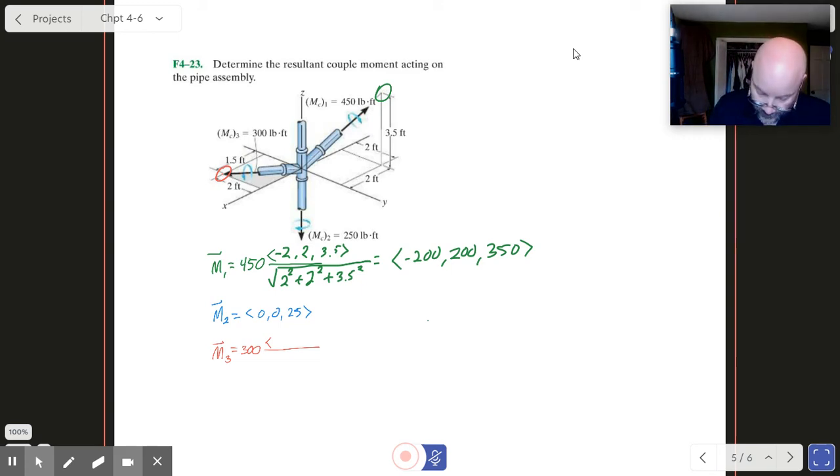And so in terms of X, we're coming up a foot and a half. In terms of Y, we've gone backwards two. And we've stayed in the plane, so we're looking at 1.5 squared plus 2 squared plus 0 squared. Okay, and once we run the math up on that, get our numbers, we get 180 minus 240 and 0.